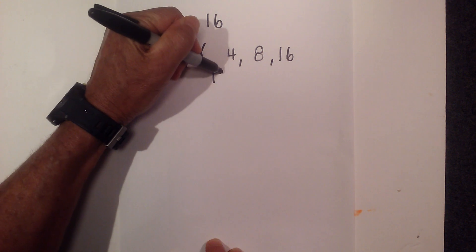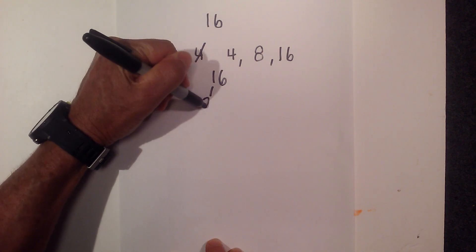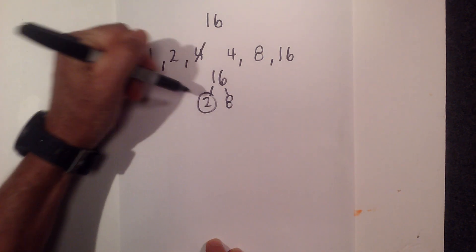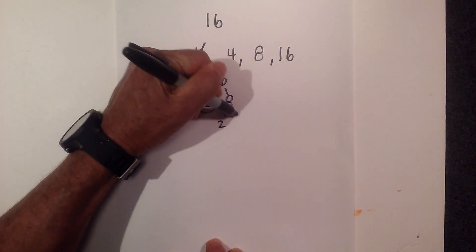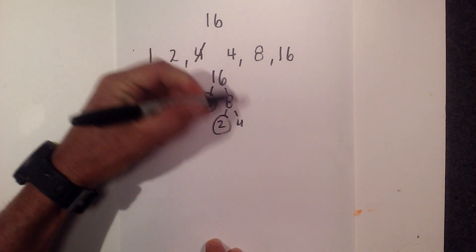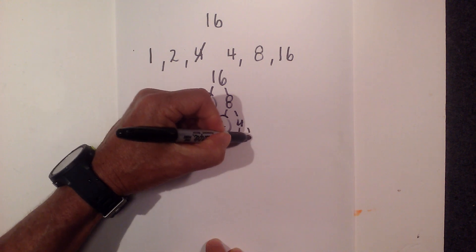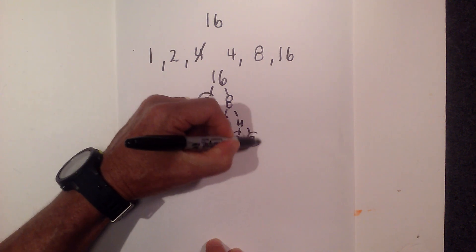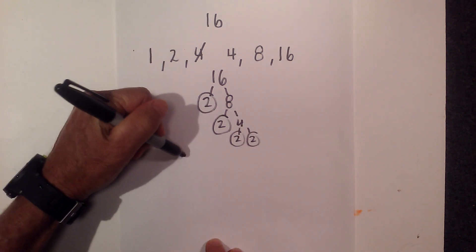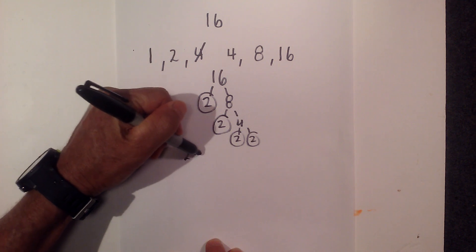Now let's do the prime numbers of 16 and complete a factor tree. 2 times 8 equals 16, 2 times 4 equals 8, and then 2 times 2 is 4. So the prime numbers of 16 are 2 times 2 times 2 times 2.